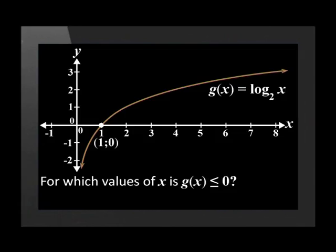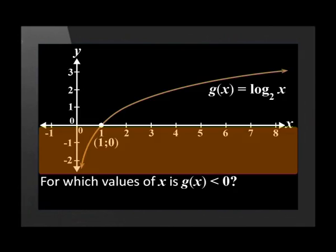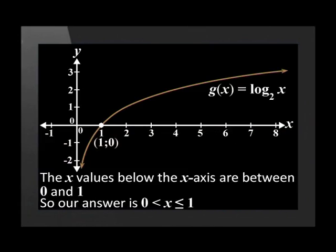Now let's use our first logarithmic function to answer a question. The first question asks, for which values of x is g(x) ≤ 0? The question requires us to look for x values below the x-axis. The x values that are below the x-axis are between 0 and 1, so our answer is 0 < x ≤ 1. We cannot include 0 in the inequality as this is the asymptote.